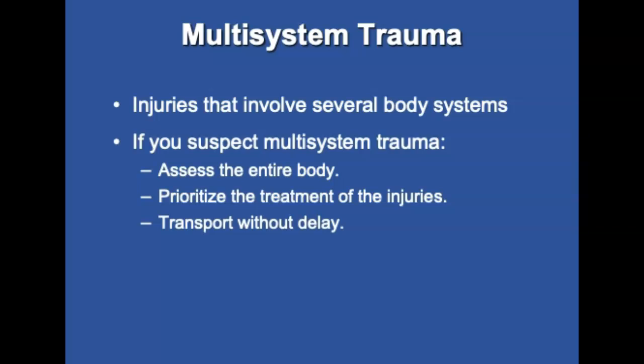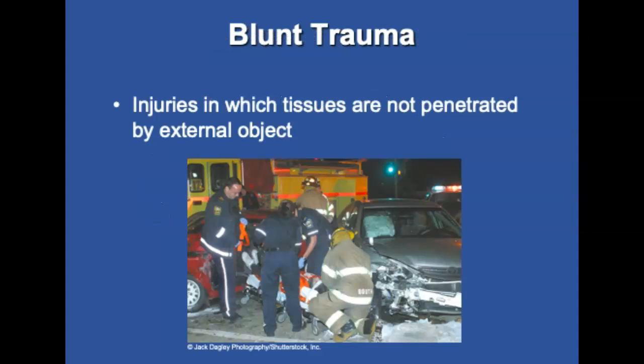Multi-system trauma describes injuries that involve several body systems. The body has a much harder time dealing with multiple injuries across several major body areas, generally caused by events that affect the entire body — often both blunt and penetrating trauma occur. If you suspect multi-body system involvement, assess the patient's entire body and prioritize treatment of injuries, transporting without delay. Blunt trauma refers to injuries in which tissues are not penetrated by external objects, and commonly occurs in motor vehicle accidents, pedestrian-vehicle collisions, motorcycle crashes, falls from heights, sports injuries, or blasts when no shrapnel is involved.